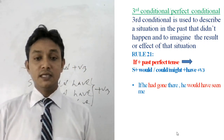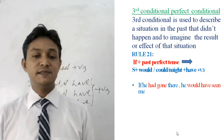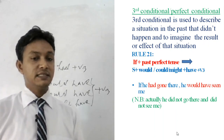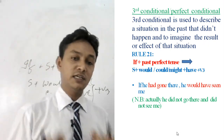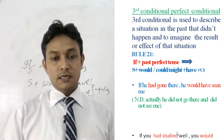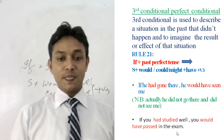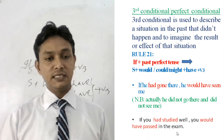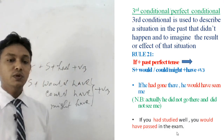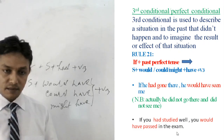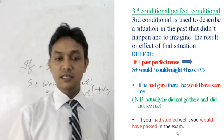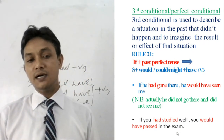Examples of third conditional: 'If he had gone there, he would have seen me.' In reality, he had not gone there — this did not happen in the past — but we are thinking of that situation. Another example: 'If you had studied well, you would have passed in the exam.' In reality, you had not passed, but we are describing the condition: if you had studied well, you would have passed.